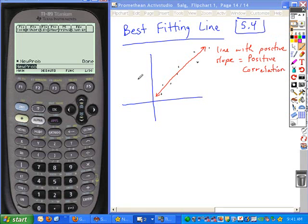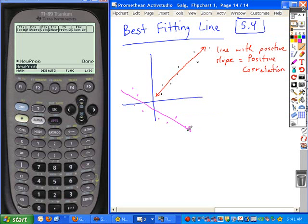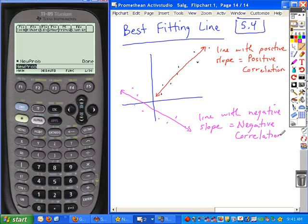If you have a line that has a negative slope, so again, as you're looking at information, if it approximates a straight line and the slope is negative on that straight line, so any straight line with a negative slope would be a negative correlation. And so if you hear those terms, that's what it's referring to. Pretty easy. It just refers to what the slope of the line is.